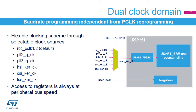The USART has a flexible clocking scheme. Its clock source can be selected in the RCC and can be either the peripheral clock or APB clock, the PLL-2Q, the PLL-3Q, the HSI or CSI, or the LSE clock. The USART clock source can be divided by a programmable factor in the USART pre-SC register. The registers are accessed through the APB bus, and the kernel is clocked with USART KERCK, pre-scaled or not, which is independent from the APB clock.